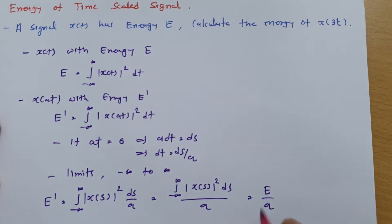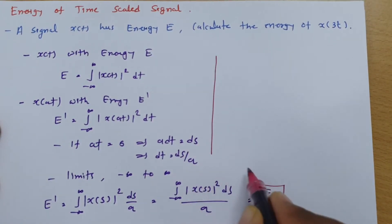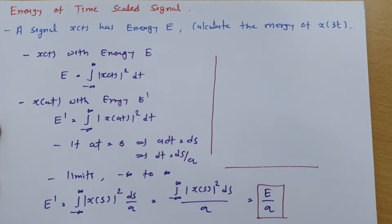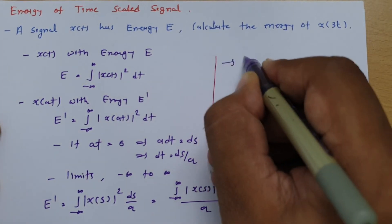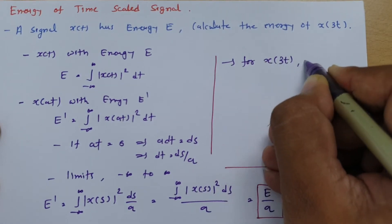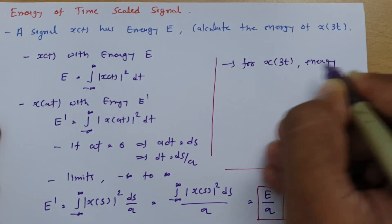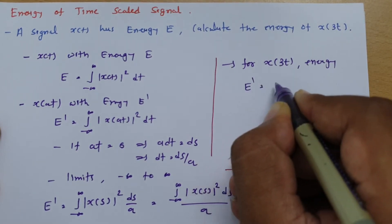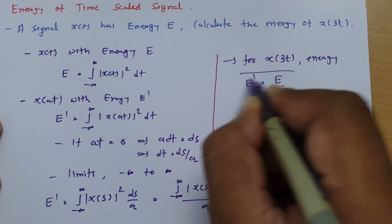So basically if you scale signal with a, then new energy will be E by a. If you scale signal by time scale a, then new energy will be E by a. So here for x(3t) energy, if I say E', then it has to be E divided by 3.